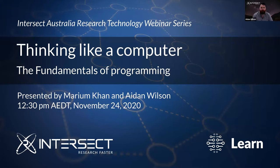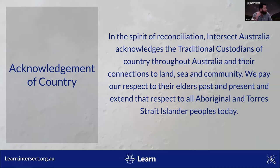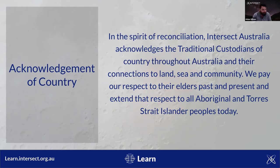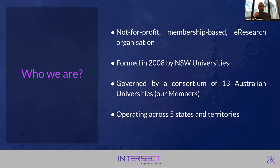Before we start, we'd like to acknowledge the traditional custodians of country throughout Australia and their connections to land, sea, and community. We're all meeting online today. For Anastasios, they are the Camaraigal people of the Eora Nation; for Aidan, the Gadigal people of the Eora Nation; and for Mariam, they are the Kaurna people in Adelaide.